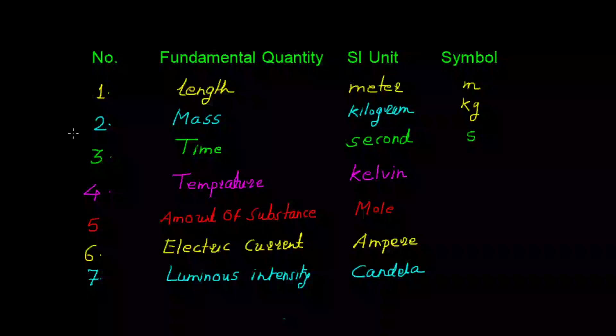The fourth fundamental quantity is temperature. SI unit is Kelvin and its symbol is capital K. The fifth fundamental quantity is amount of substance. Its SI unit is mole and symbol is mol.